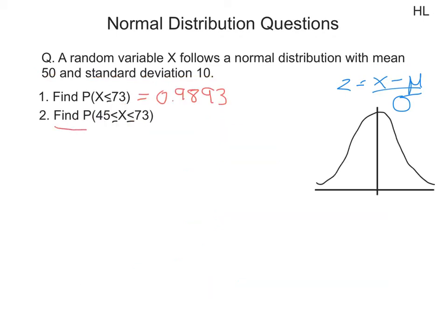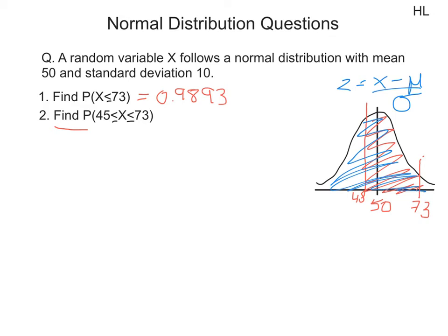The next question asks us to find the probability that x is greater than or equal to 45 but also less than or equal to 73. Looking at our normal distribution, the mean is 50, 73 would be about two standard deviations above the mean, and 45 is slightly below the mean. This question asks us to find the probability a data value is in the red shaded part. We approach this by finding the probability of being less than 73 — the blue shaded part — and subtracting the probability of being less than 45, the black shaded part. Subtracting the black from the blue leaves us with the red shaded part: the probability that x is between 45 and 73.